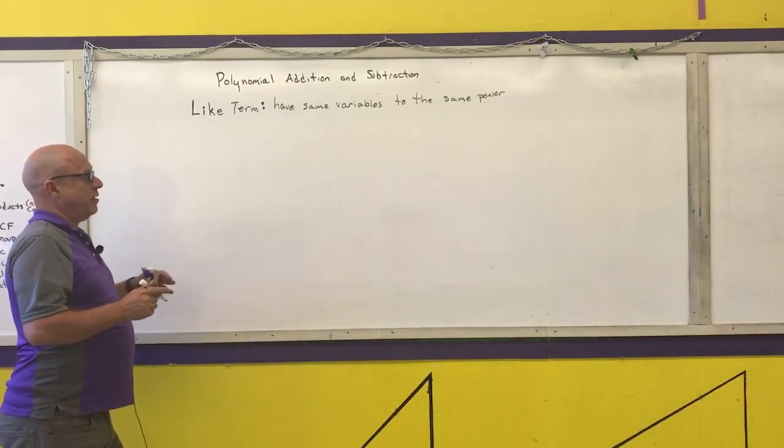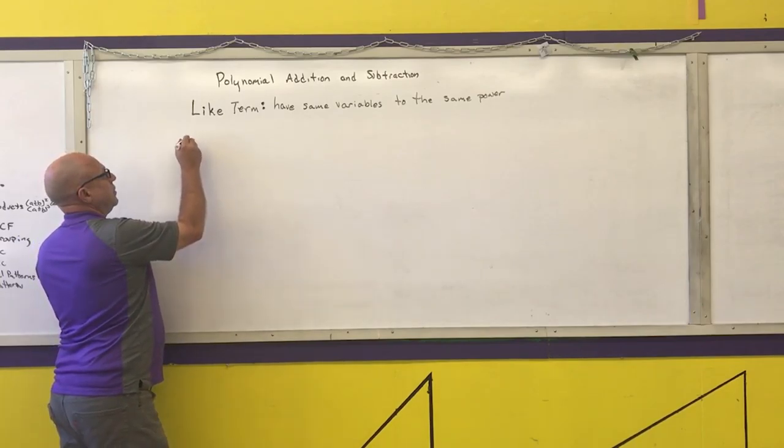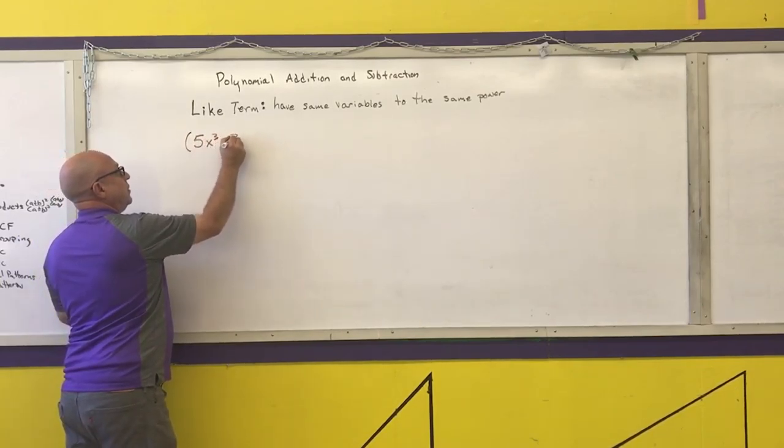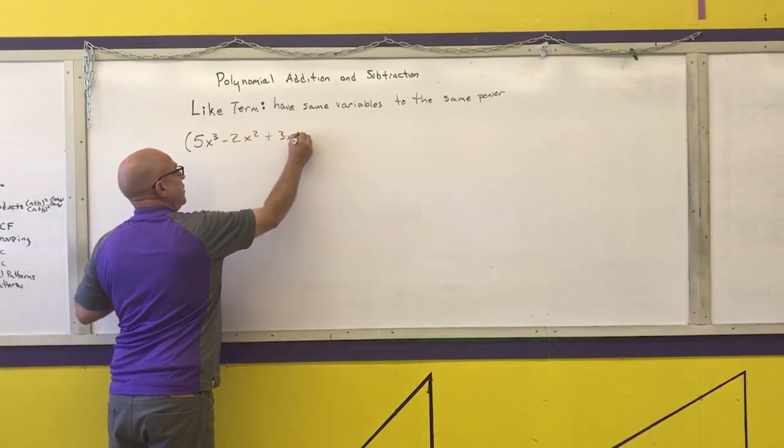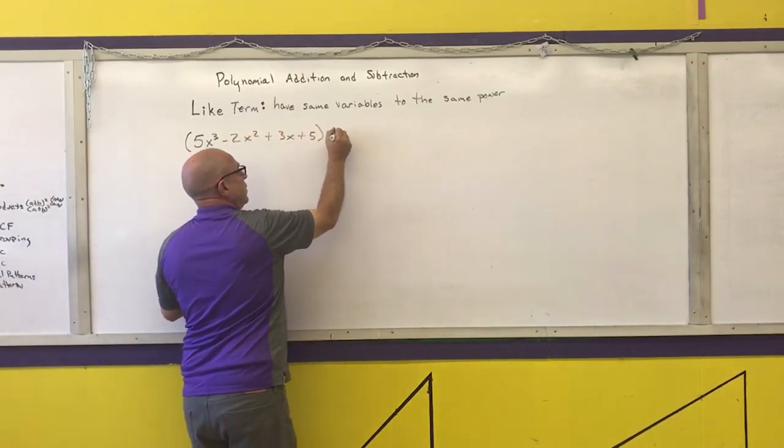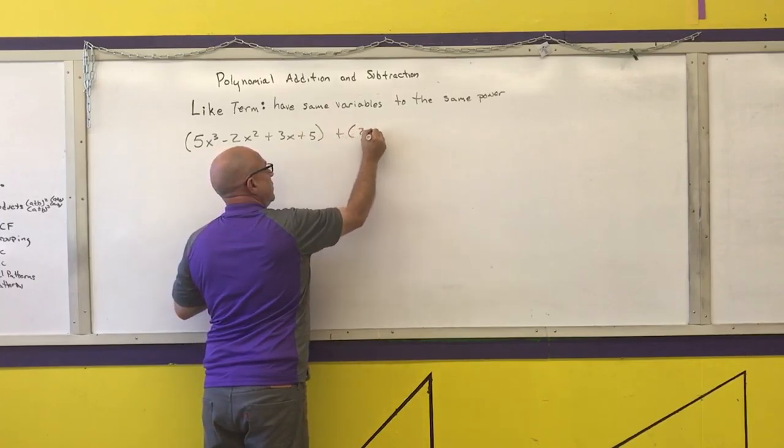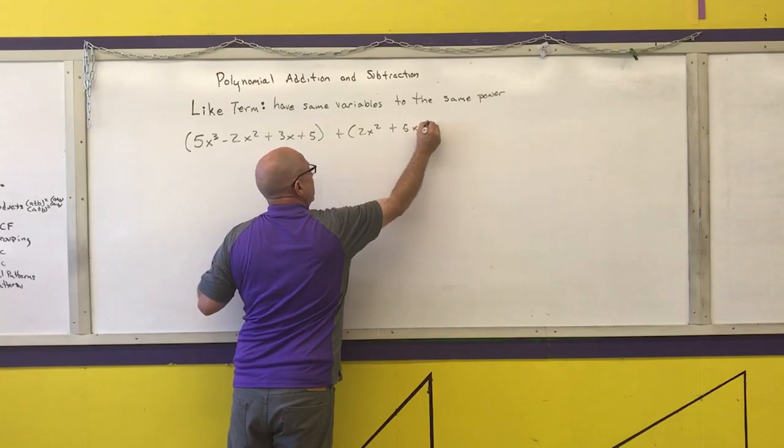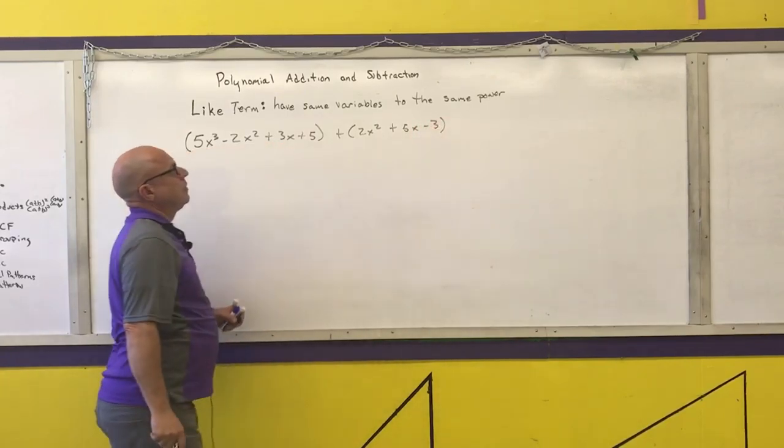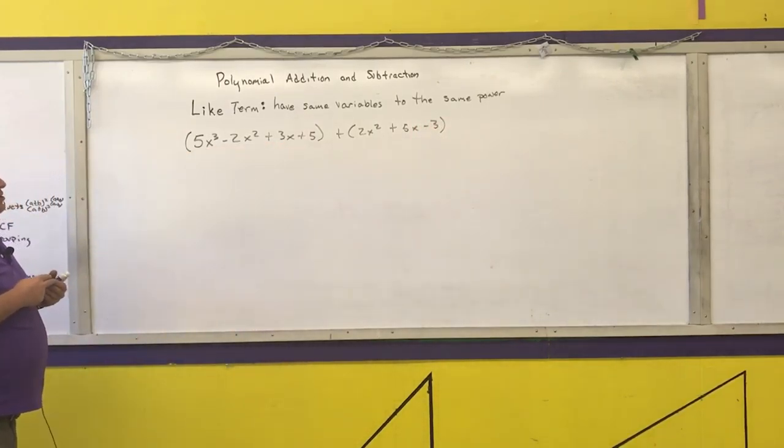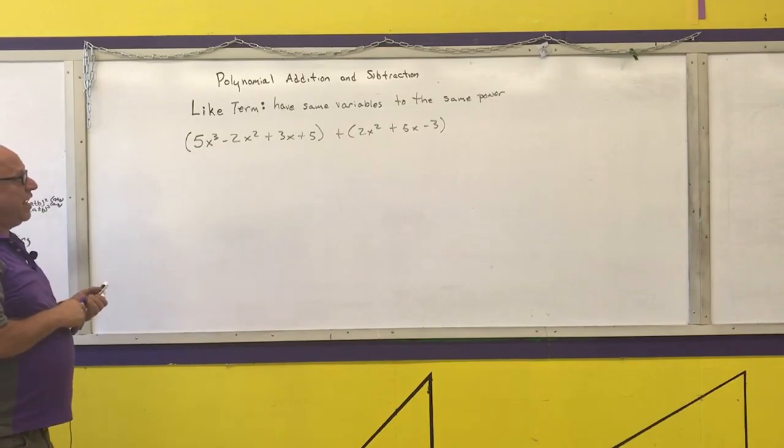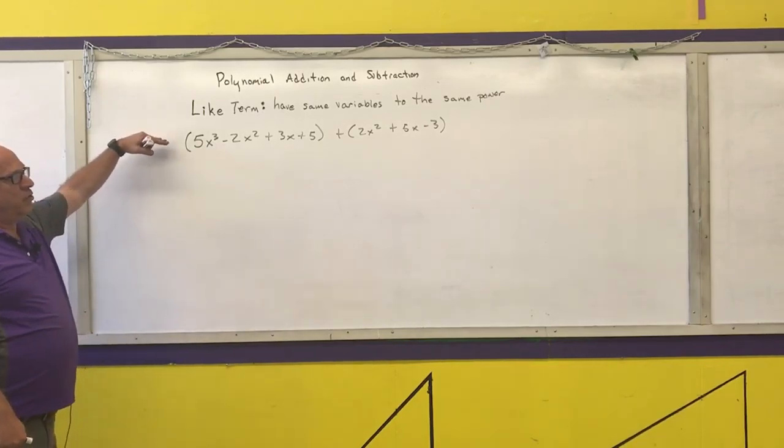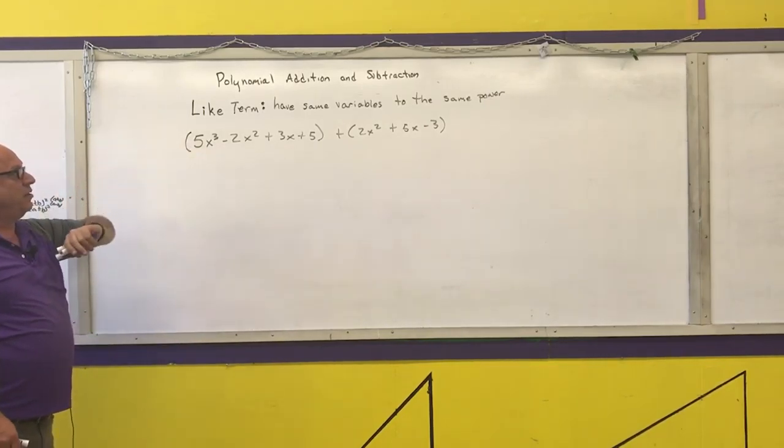For basic polynomial addition, I'm going to make a couple of trinomials. If I give you two polynomials and ask you to add them, they're either going to be written horizontally or I will write two polynomials separately.